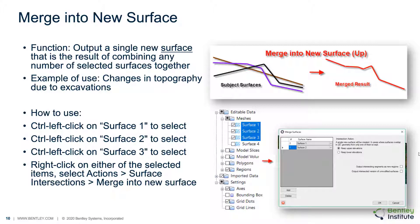An example application may be related to changes in topography over time due to excavations. The methodology is to select all existing surfaces by holding down the control key, then right-click on the selected surfaces and select Actions, Surface Intersections, Merge into New Surfaces. The dialog will then appear where the user can complete the selections for the functionality.